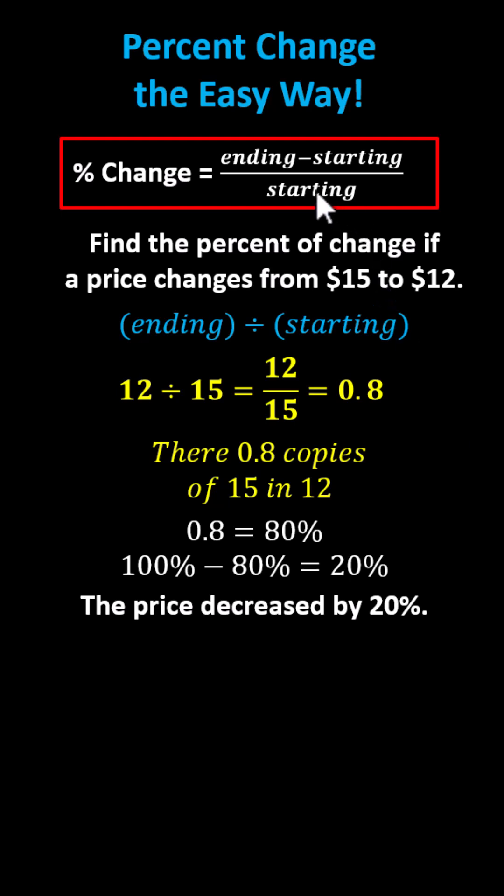If we go back and use the percent of change formula, we get the difference of 12 and 15 divided by 15, which is negative 0.2 or negative 20%. The negative indicates we have a decrease of 20%.